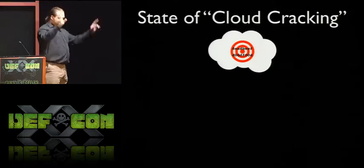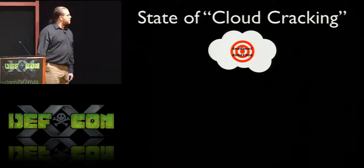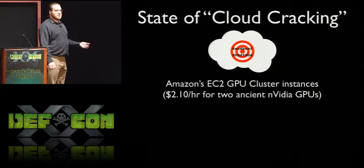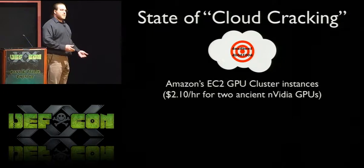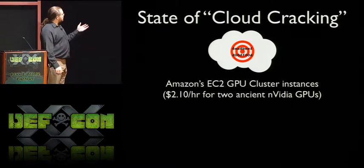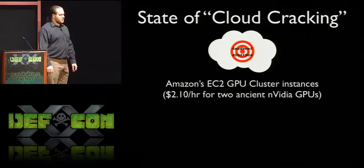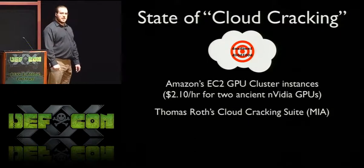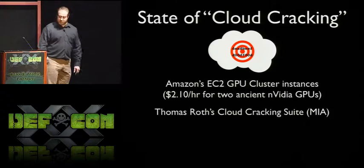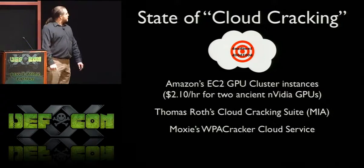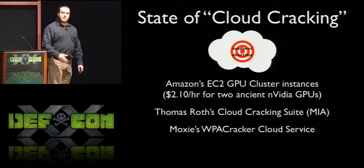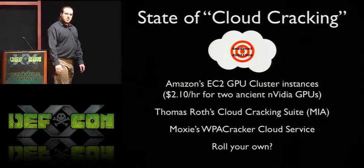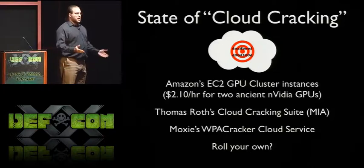So let's take a look at the state of cloud cracking. It's been in the press for the last two or three years. We have Amazon EC2 GPU instances, which are either the end of passwords as we know it because anybody can afford to crack lots of passwords, or $2.10 an hour for two relatively ancient NVIDIA GPUs that don't perform well. Last year at Black Hat we heard Thomas Roth talk about his cloud cracking suite, and I've not seen it. Moxie, who talked earlier today, has his WPA cracker cloud service, which is quite successful, but involves you sending your target hashes off to his systems, which may or may not be acceptable.